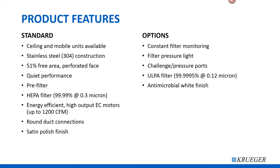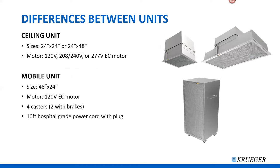The ceiling unit is available in two sizes — 2x2 and 2x4 — with motor voltages of 120, 208, 240, or 277. The mobile unit comes in one size, 4x2, with a single motor voltage of 120 volts since that's most compatible with buildings. It includes four casters, two of which have locking brakes, and a 10-foot hospital-grade power cord, so you simply roll it into a room, plug it into the wall, and you're ready to go.